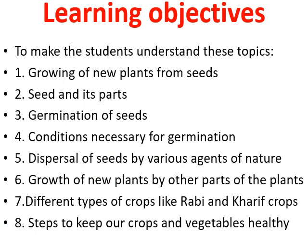In this chapter, we will learn these topics: how a new plant grows from seed; seed and its parts; how a seed germinates and what conditions are necessary for germination; dispersal of seeds and how seeds get dispersed from one place to another; how new plants grow from other parts of the plant; different crops — Rabi and Kharif crops; and how to keep our crops and vegetables healthy. I will discuss all these points in two different PPTs.